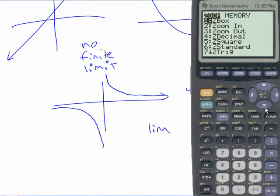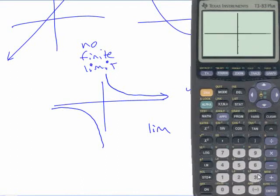Let's just do this the simple way and do zoom decimal. If I trace the curve here and go to the right, what's going to happen with these values as I continue to go to the right infinitely? They're getting smaller and smaller.